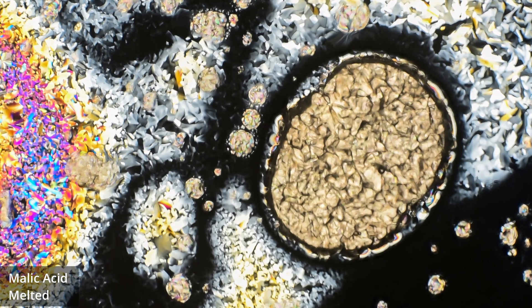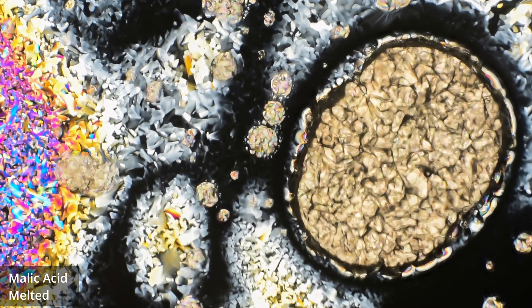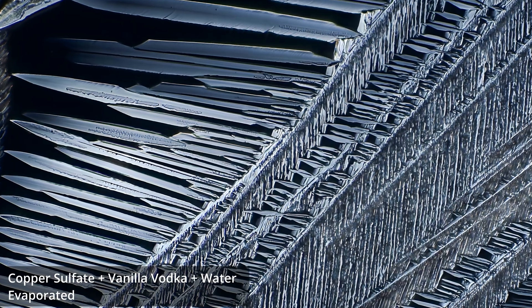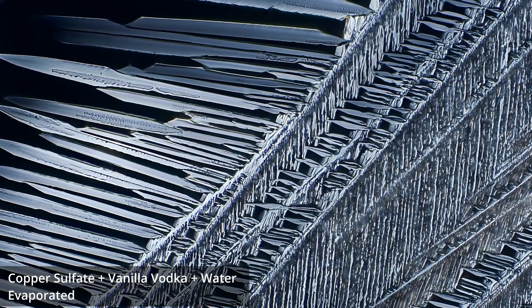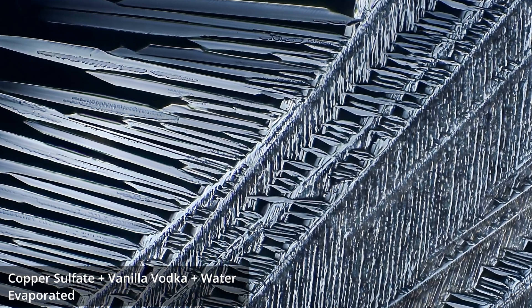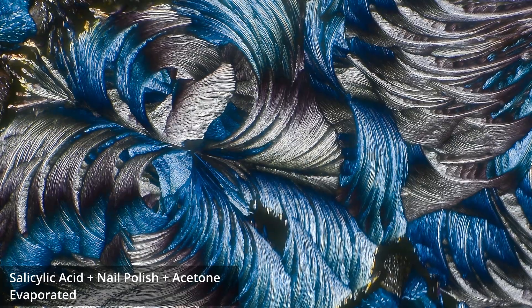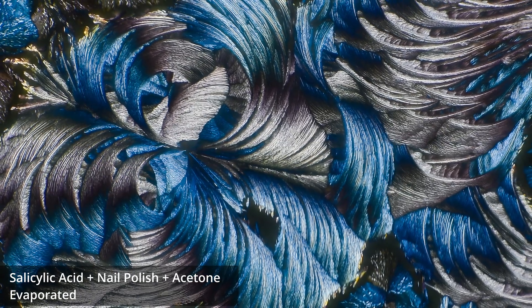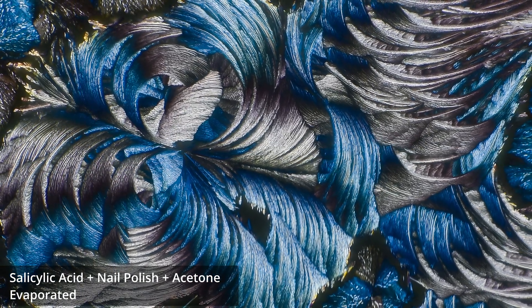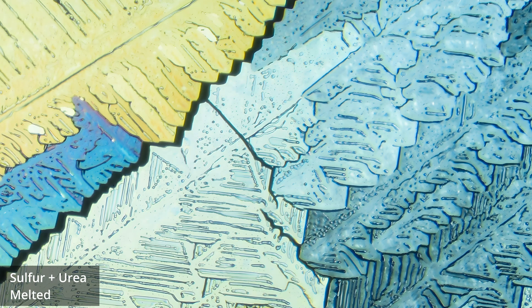Temperature, solvent choice, and even how we spread the solution, all affect everything from surface tension to how molecules can move and orient during crystallization. Additives can dramatically alter crystal growth. A polymer like nail polish distorts normal faces, while a co-crystallizer like urea rewires the internal structure. We're engineering crystal architecture at the molecular scale.